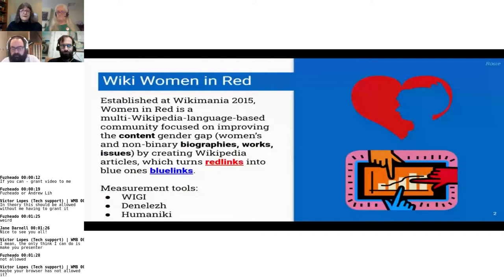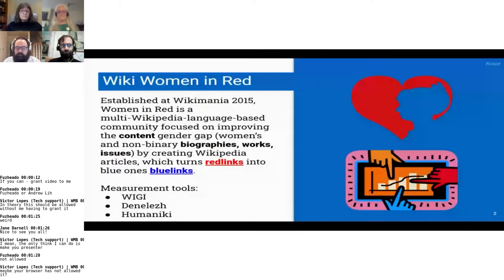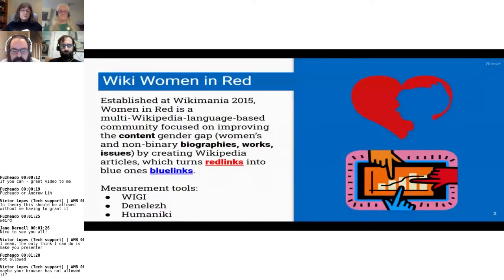Wikimedia Women in Red was established at Wikimedia in 2015. It is a multi-Wikipedia language-based community that focuses on improving the content gender gap — content, not editor — content gender gap, which includes women's and non-binary biographies, works, and issues broadly construed. We do this by creating Wikipedia articles, which turn red links into blue ones — ergo, Women in Red.